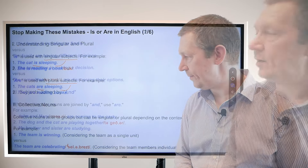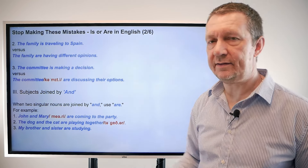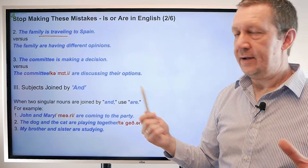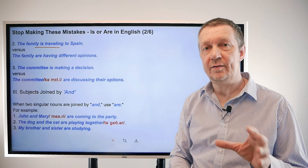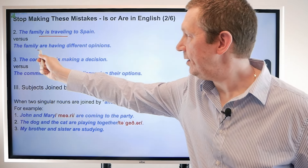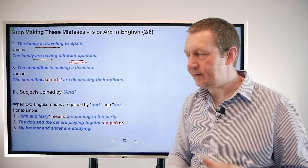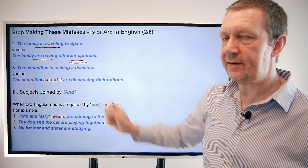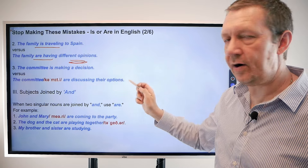Here are a few more examples of collective nouns used in different contexts. 'The family is traveling to Spain' — the family as a unit. In another context: 'the family are having different opinions' — here we see the family as a group of people, so we use 'are.' Another example: 'the committee is making a decision' — the committee as a whole, one entity. 'The committee are discussing their options' — as a group of individuals.